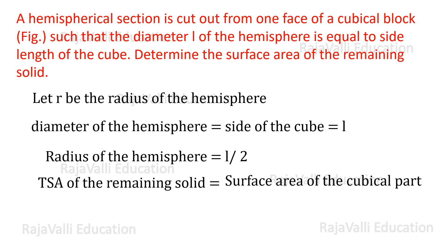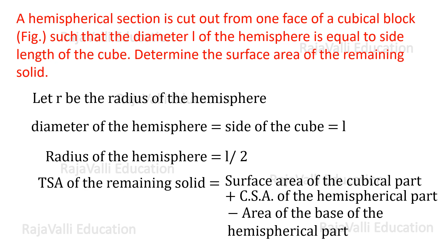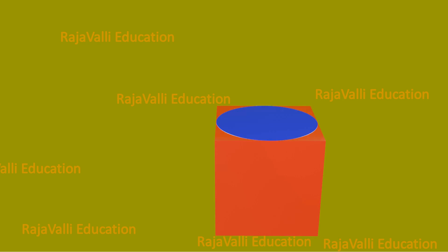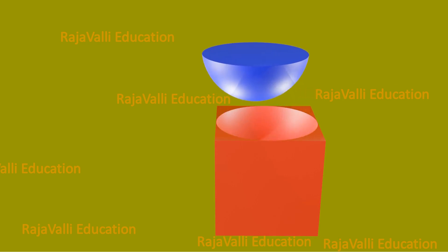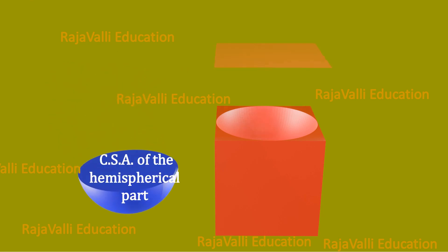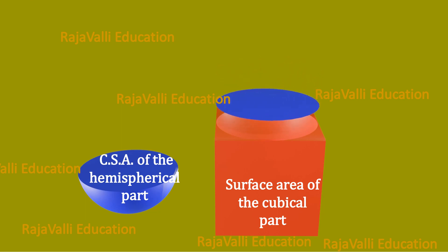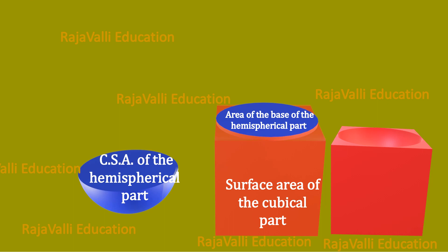The total surface area of the remaining solid equals the surface area of the cubical part, plus the curved surface area of the hemispherical part, minus the area of the base of the hemispherical part. This is the given picture showing the hemispherical part cut out from the cubical part.